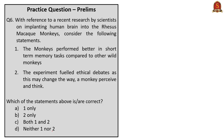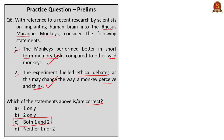Moving on to the next question: with reference to a recent research on implanting a human brain gene into rhesus macaque monkeys, consider the following statements. Statement 1: the monkeys performed better in short-term memory tasks compared to other wild monkeys. Statement 2: the experiment fueled ethical debates as this may change the way a monkey perceives and thinks. Statement 1 is correct — they performed well in short-term memory tasks and had a quicker reaction time compared to wild non-implanted monkeys. Statement 2 is also correct — there were huge ethical debates as this may fundamentally change the way these monkeys perceive and they may become more human-like. Hence, option C — both one and two — is the correct answer.